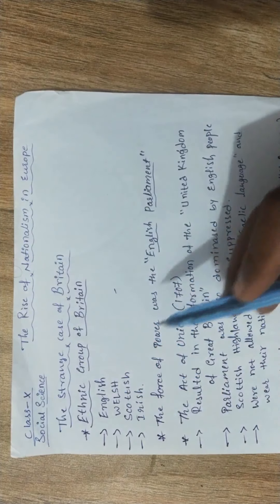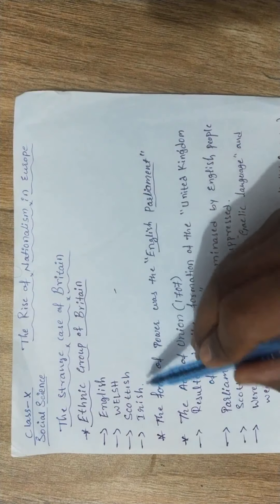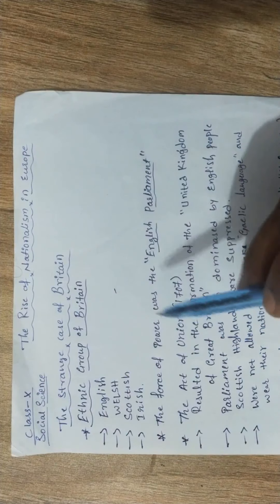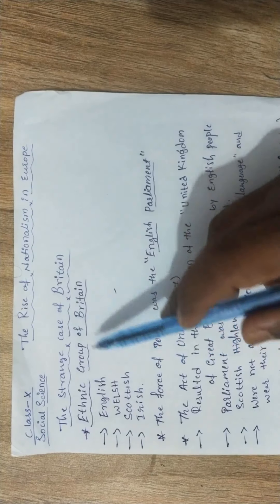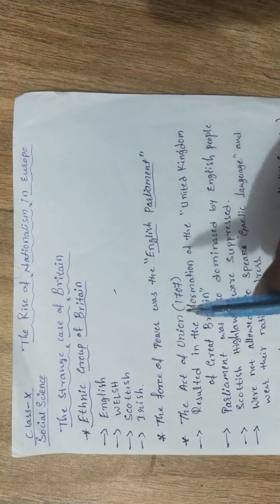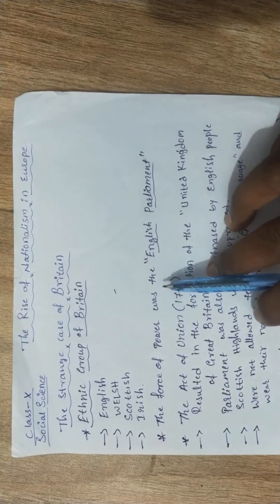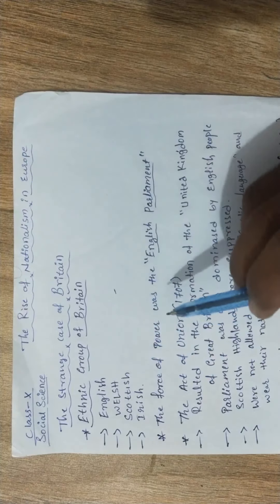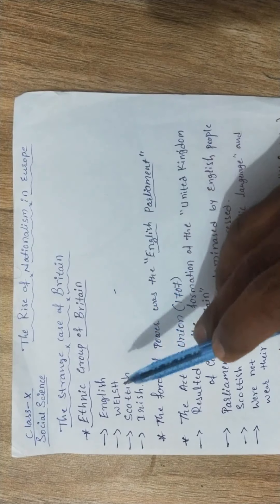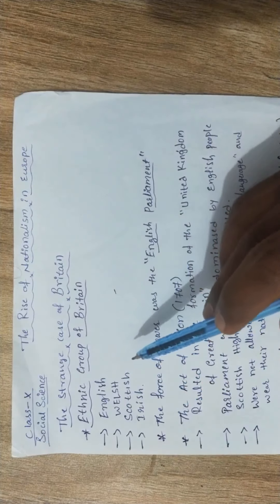Here in Britain there are four major ethnic groups: English, Welsh, Scottish, and Irish people. Each group had its own language, its own traditions, its own living style, its own dress codes. So the question is — how could they leave everything and come together to form a single unified nation-state?